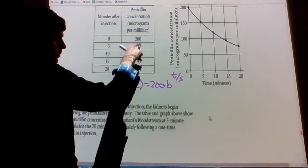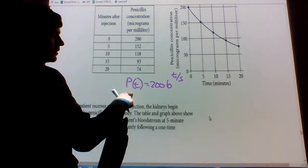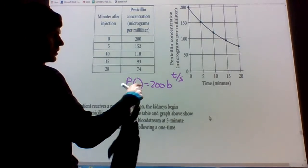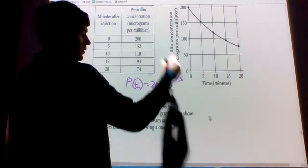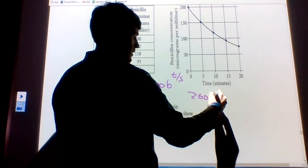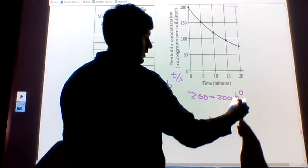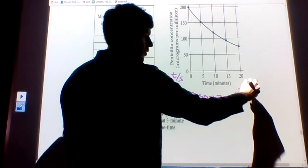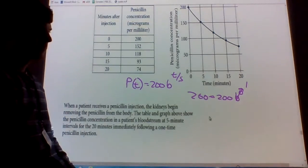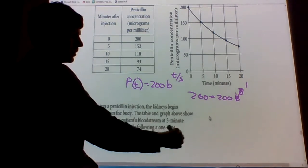So you plug in this, pick any of them. Except you don't want 200 because B is going to go away. If you put in the first one, you're going to get 200 equals 200 times B to the 0. The B to the 0 is simply 1. So that doesn't help you. So you need to plug in one of the other points.